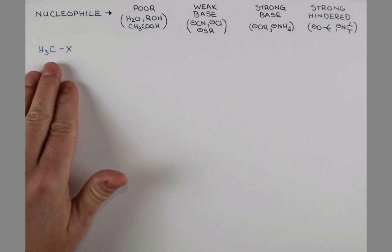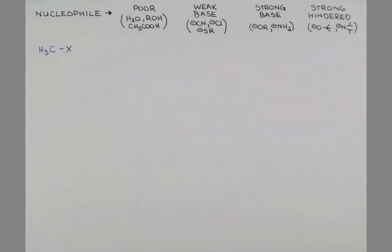This substrate cannot ionize to form a carbocation. It'd be very, very unstable. With poor nucleophiles, this substrate does not react very well at all. For our purposes, we're going to say that it has no reaction. The reaction is incredibly slow.